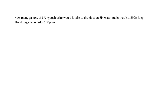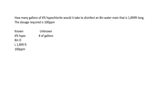Question two: how many gallons of 6% hypochlorite would it take to disinfect an 8-inch water main that is 1,899 feet long? The dosage required is 100 parts per million. Knowns: 6% hypochlorite solution, 8-inch diameter, 1,899-foot pipe, dose of 100 ppm. Unknown: how many gallons of hypochlorite this will take.